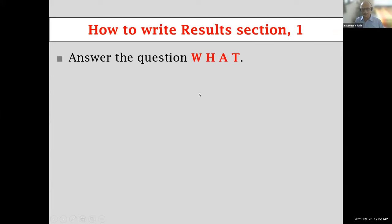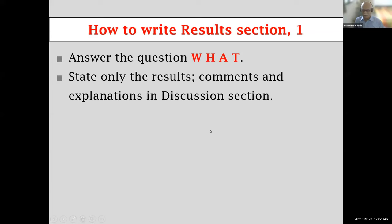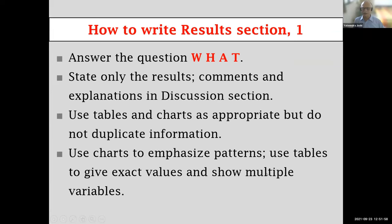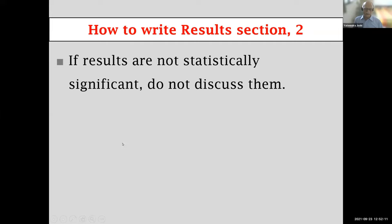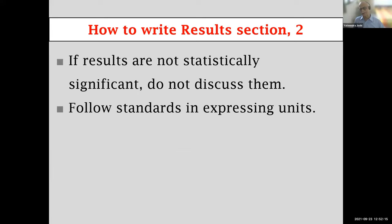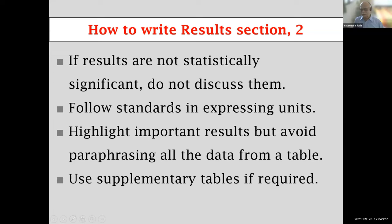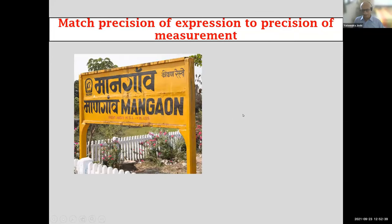Results answers 'What?' — this is the objective part of your paper presenting your findings via tables and charts. Do not start explaining results in the results section — that is the job of the discussion. You cannot use the same data once as a chart and once as a table — choose one. If statistical analysis shows no significant differences, there is no point discussing them. Use the past tense throughout the results section.